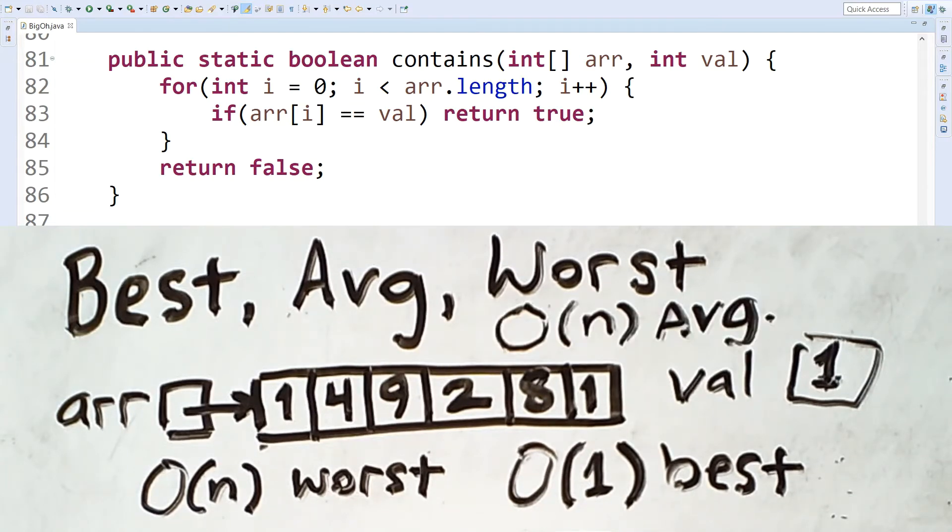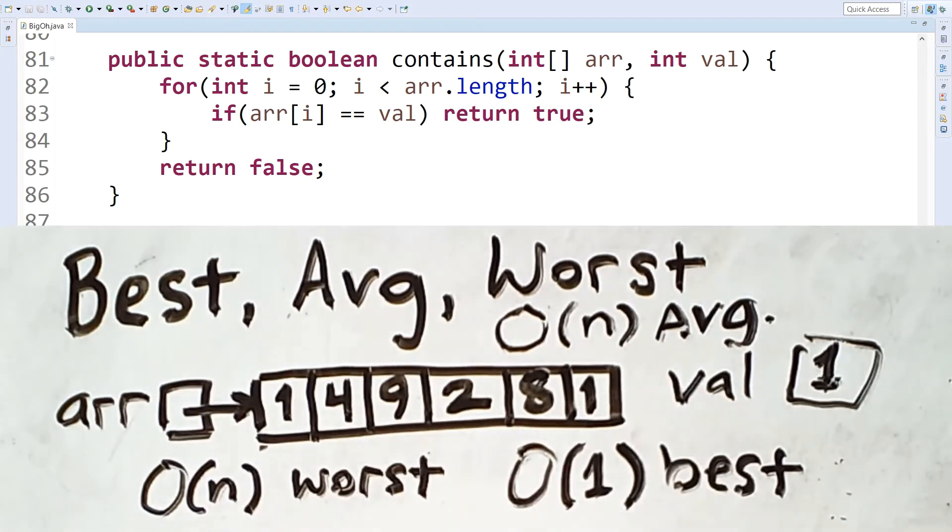this means that the average case is still O of N. Therefore, in this particular example, the average case happens to equal the worst case. But that is not necessarily true. It really does depend on the specific code you're looking at.